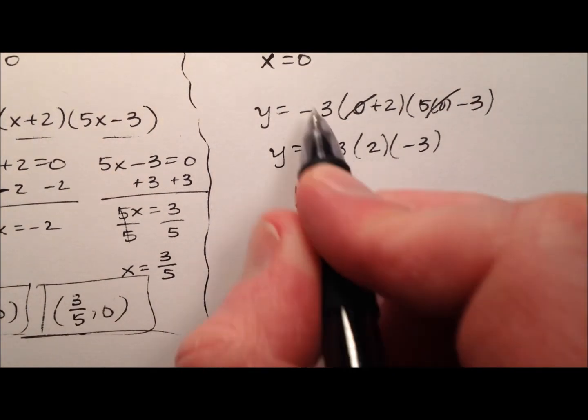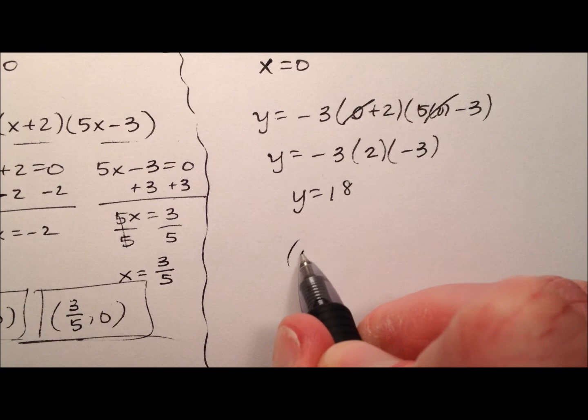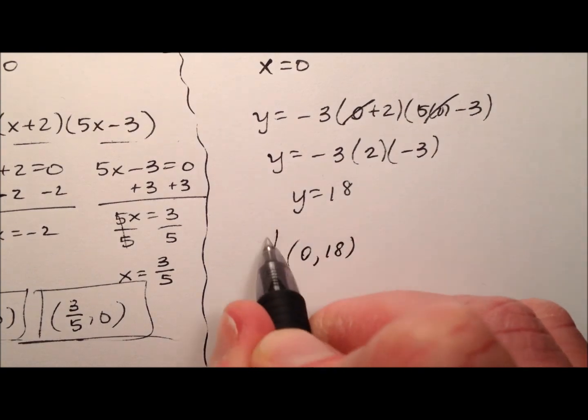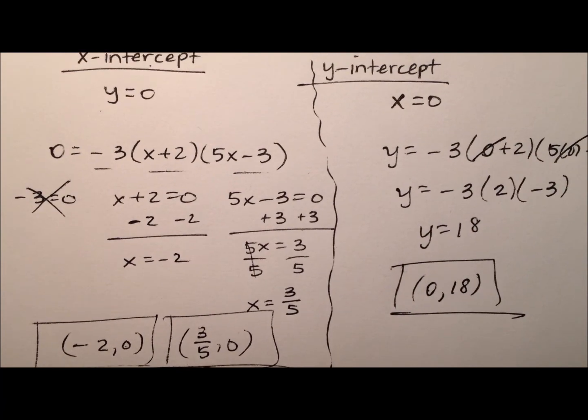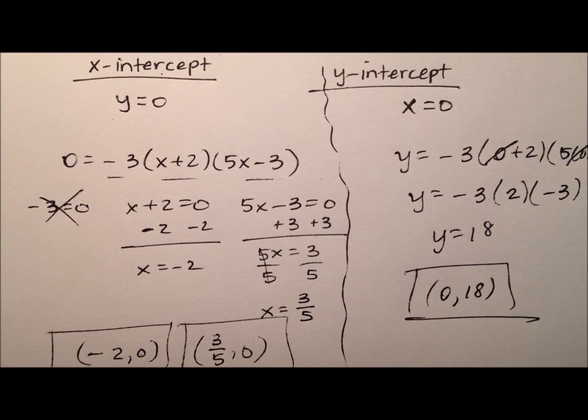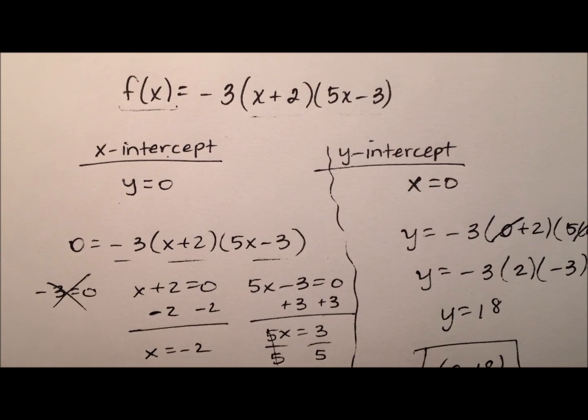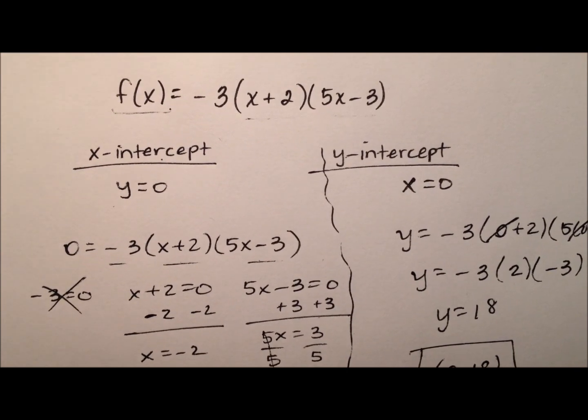So our other intercept, well, your x-value is 0, so it's going to be (0, 18). And so in that way, we went ahead and found all three of our intercepts: two x-intercepts and one y-intercept for our original function in factored form.